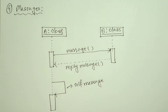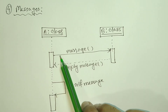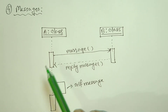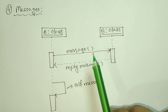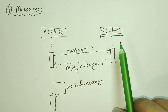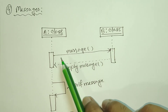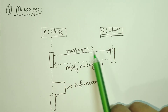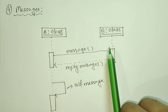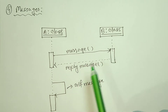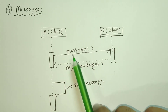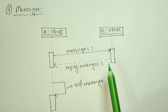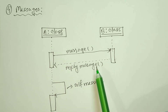This represents execution or request. A solid arrow line is used when sending a call or request message. A dotted arrow line is used for a reply message.